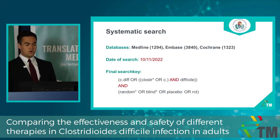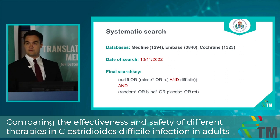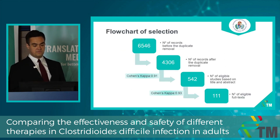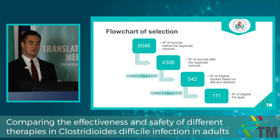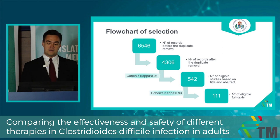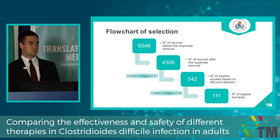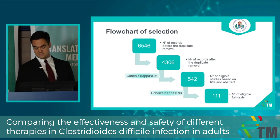We did our systematic search with a final search key in three big databases and got more than 6,500 articles. After selection, we obtained 111 eligible full-texts for data extraction. All of them are RCTs.